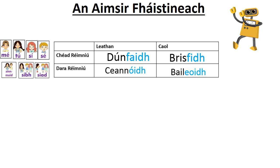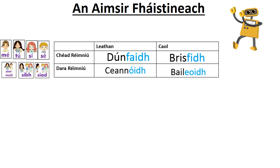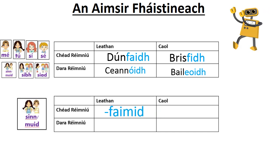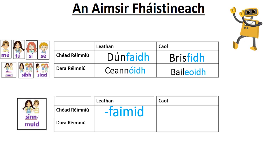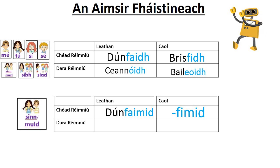For the future tense there is no special ending for 'mé', so we can use the general one. But as usual, we do have a special ending for 'muid/sinn' — '-faimid' or '-fimid', both pronunciations correct, with the 'a' missing for the narrow version.